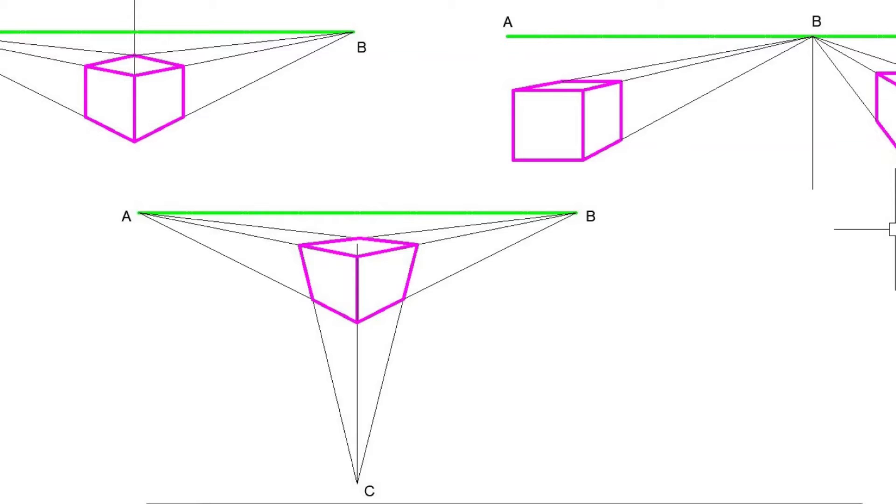Each perspective drawing must have these 4 things and we are going to look at them in detail and identify them for 1 point, 2 point and 3 point perspectives.